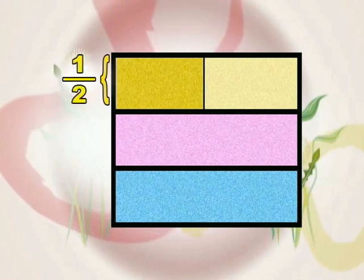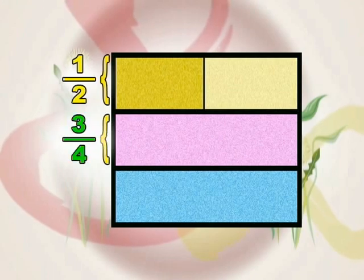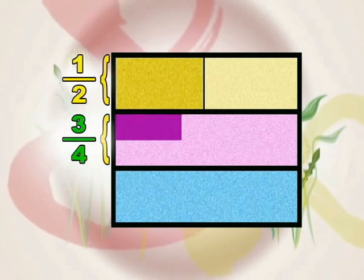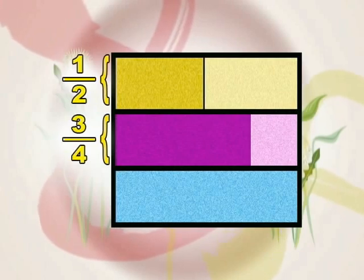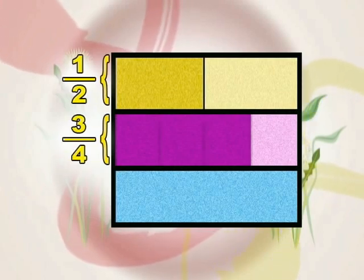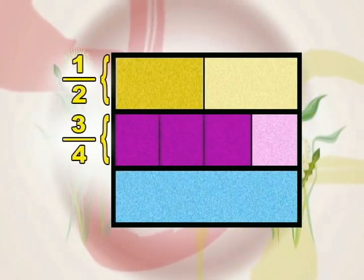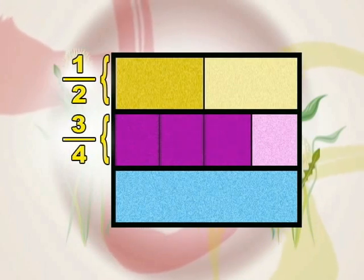Next, to show three-fourths, we fold the second strip of paper to show four equal parts. We then draw a line along the crease and shade three parts to show three-fourths.